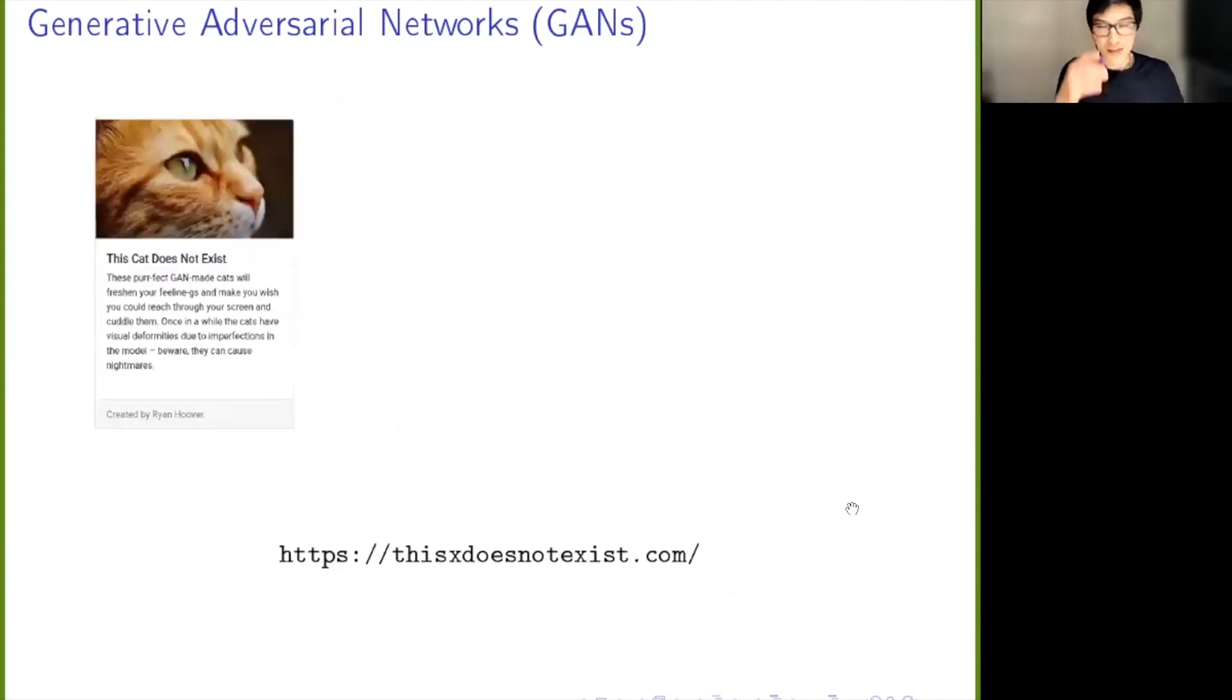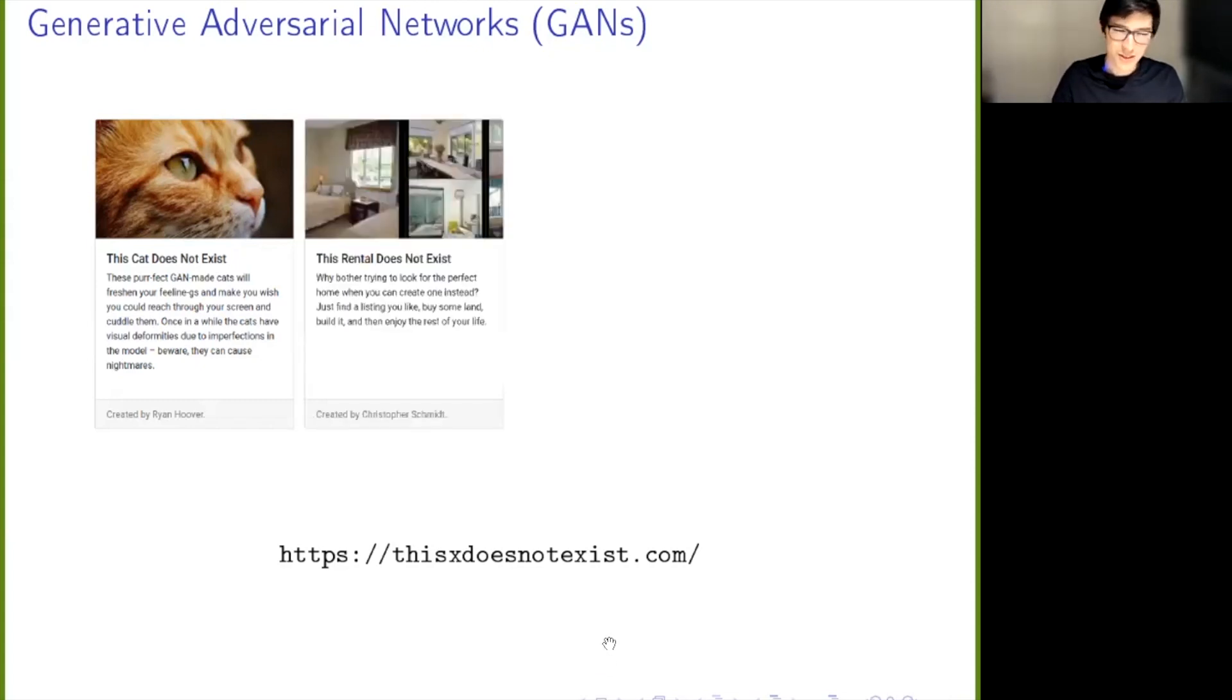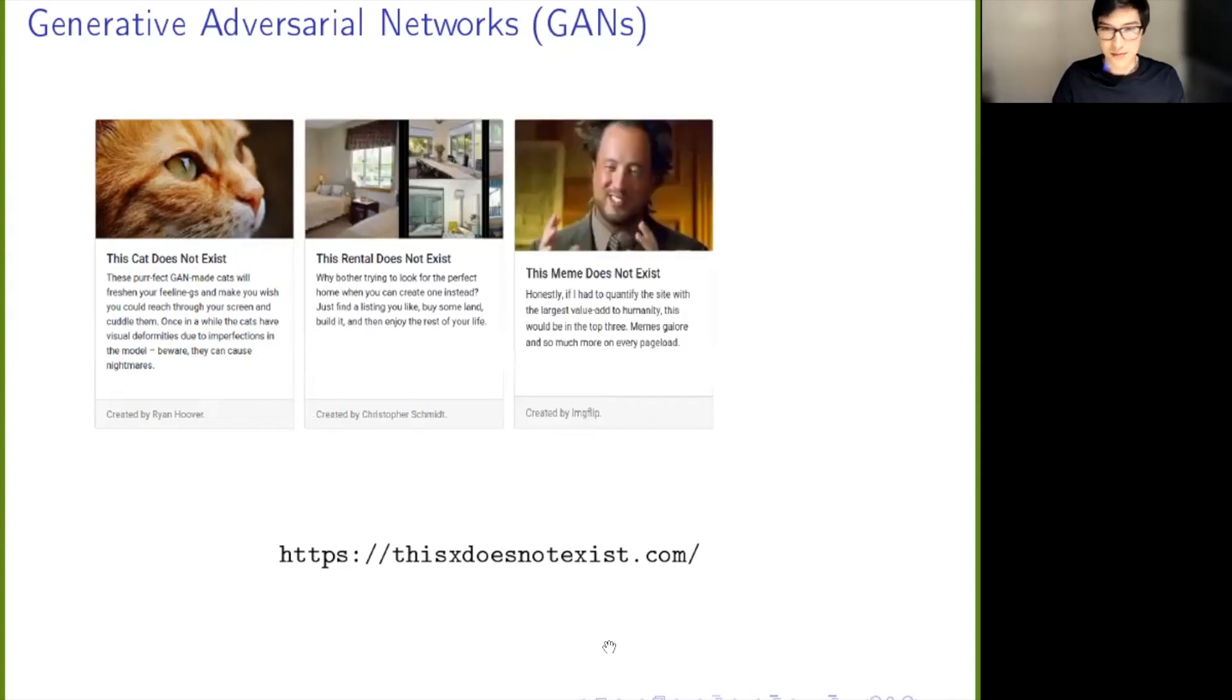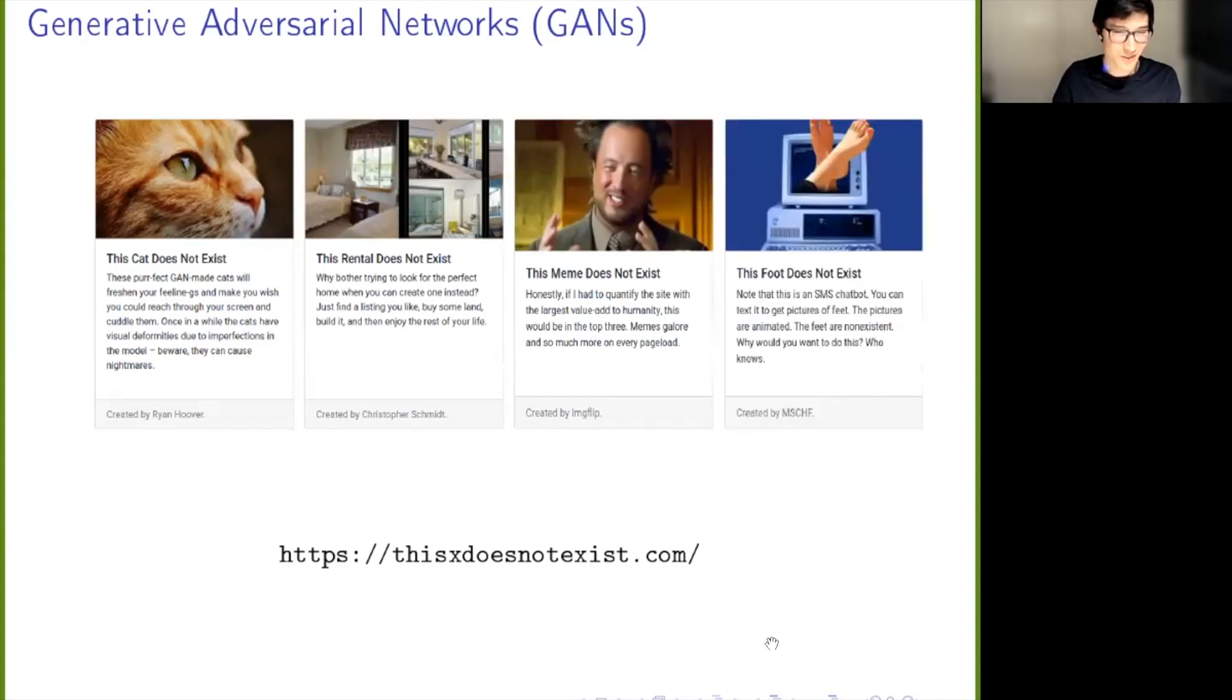The list goes on. Here's a website that is kind of a matrix of all these sorts of GANs: this X does not exist. You can have a look at what's there. This cat does not exist—of course, we're on the internet, so cats come up. You can also see some other ones there, so this rental does not exist is there as well. We're on the internet again, so this meme does not exist. It can just generate memes by refreshing the page. It gets weirder: this foot does not exist.